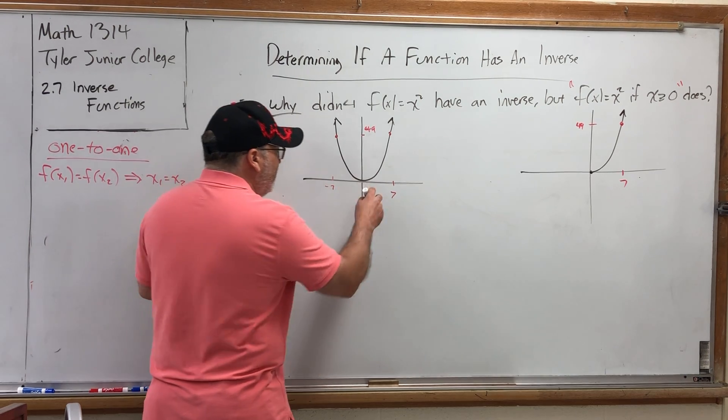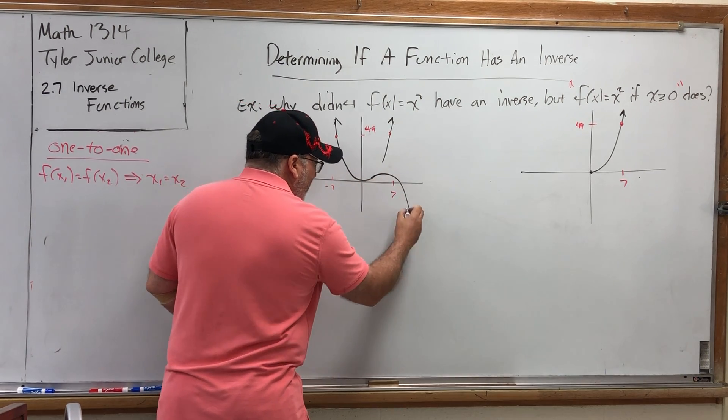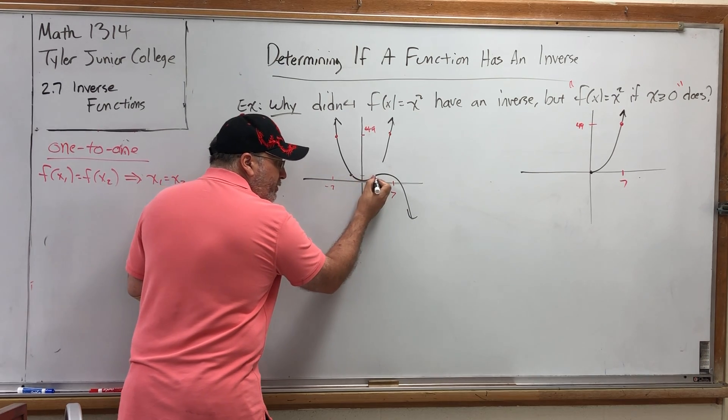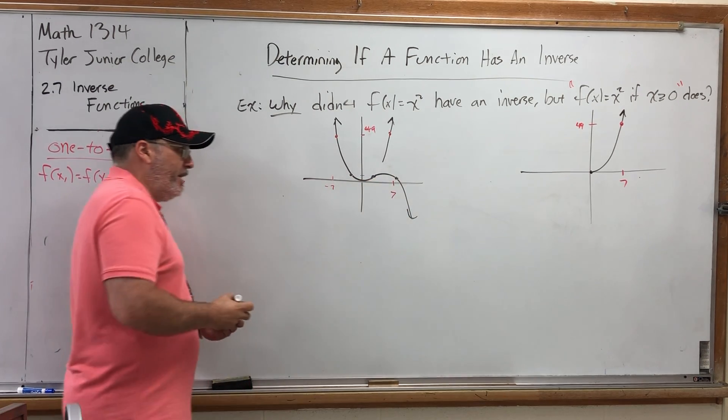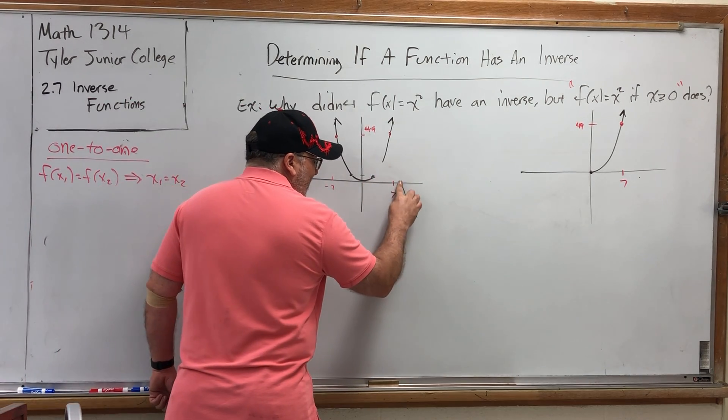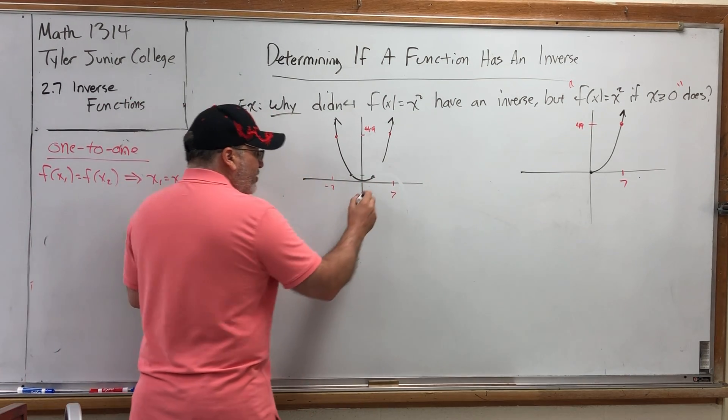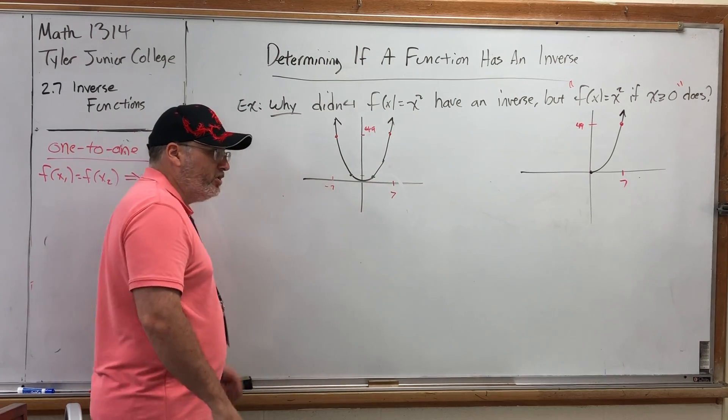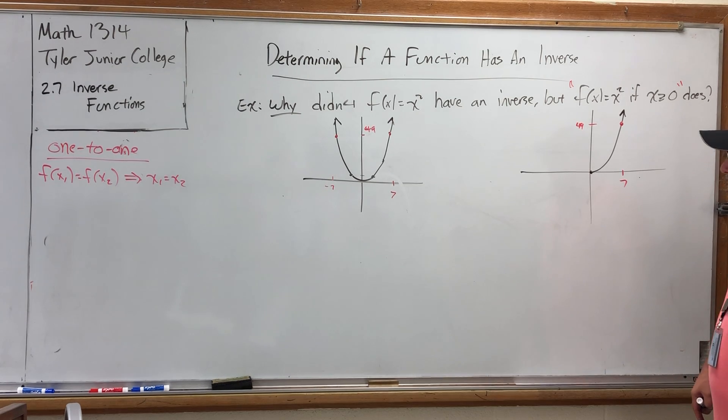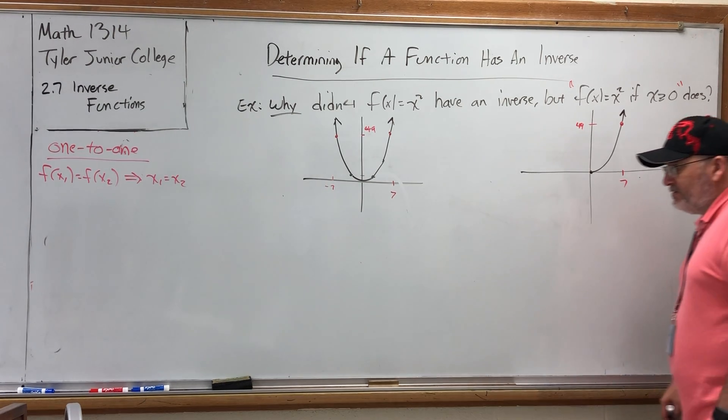Even if this had just briefly turned and gone back this way, then right here there's one, two, three x values that have the same y value. And that happened because the graph changed directions. It went from decreasing to increasing, as opposed to this graph, which does not change directions. It is strictly increasing.